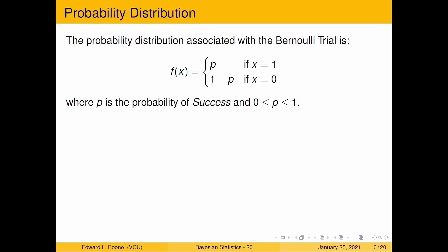Now that we have a random variable we can have a probability distribution. Here's the probability distribution associated with it. f(x) equals p if x equals one, which means success, and it's equal to one minus p if x equals zero or failure. Notice these have to add up to one. Here p is the probability of success and it has to be between zero and one, and this is the parameter of the distribution.